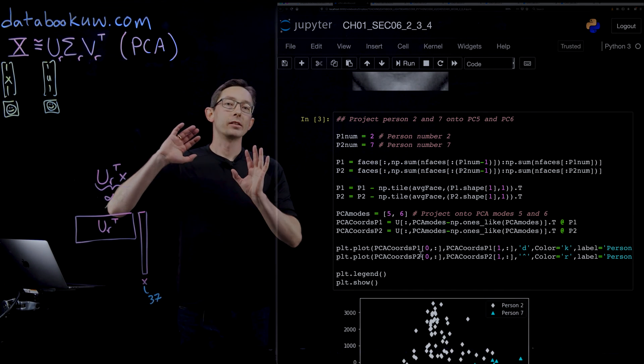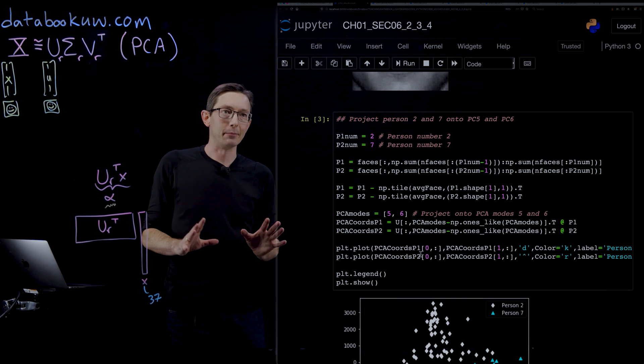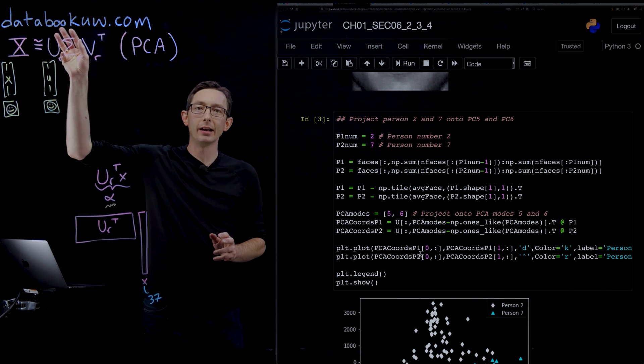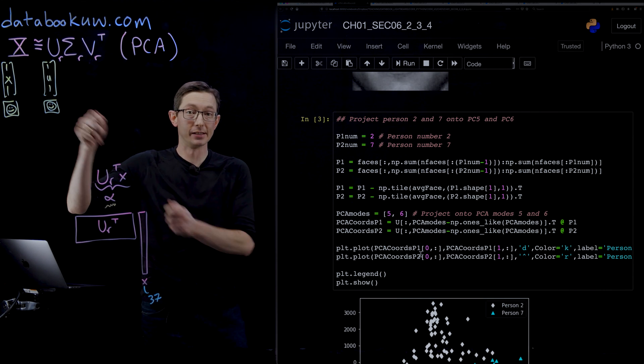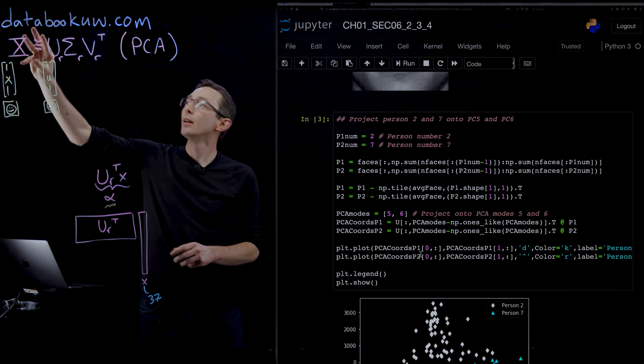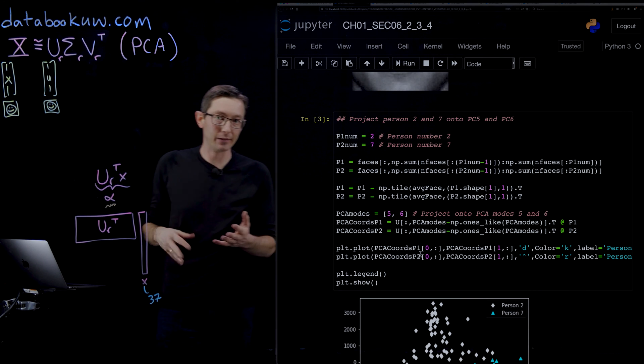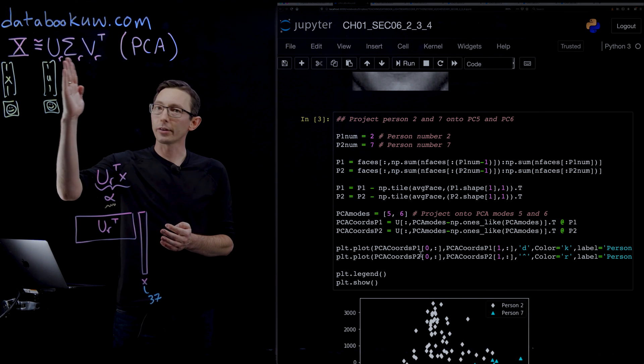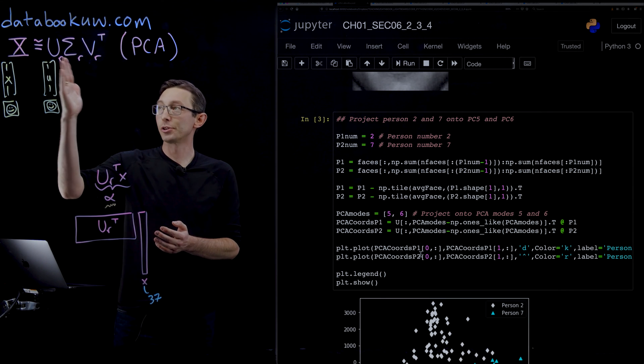Welcome back. We're looking at the eigenfaces example where we take a library of people's faces reshaped into column vectors. When we compute the SVD of this matrix, we get these orthonormal eigenfaces which are the columns of U, and these provide an orthonormal basis to represent human faces.